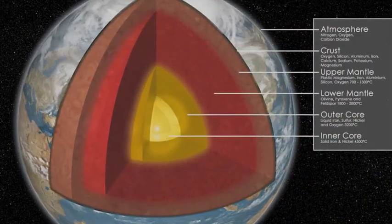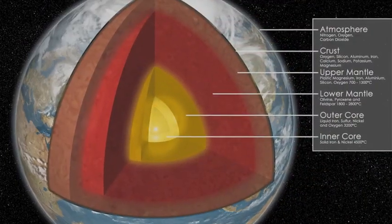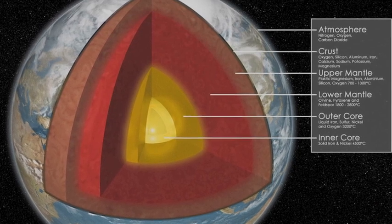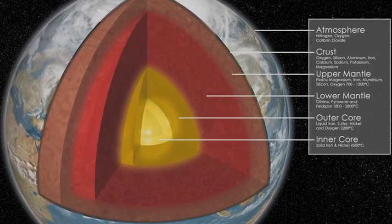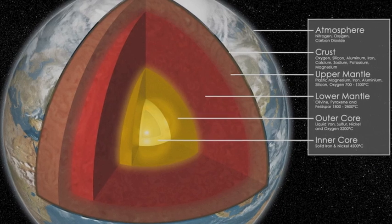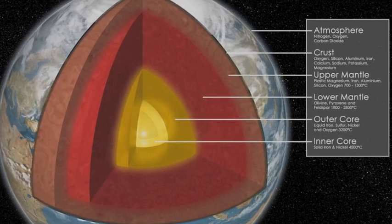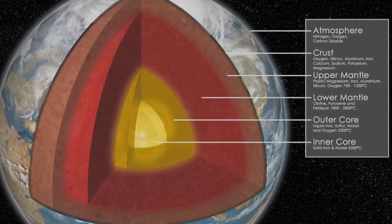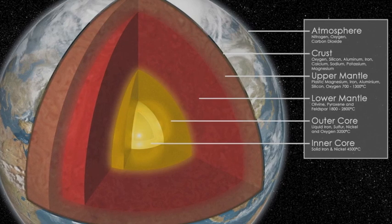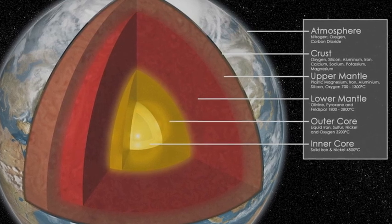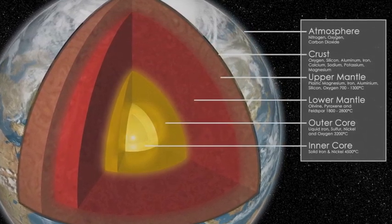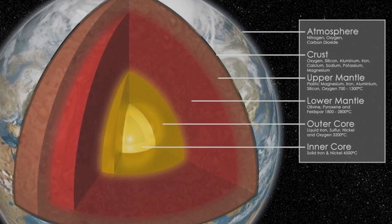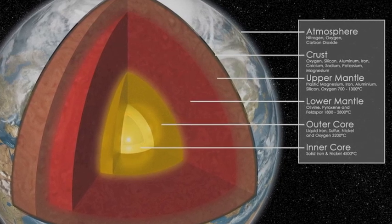To truly understand volcanoes, we're first going to look at the layers of the Earth. From the outside in, the first layer is the atmosphere, a gaseous layer composed of the air we breathe — oxygen, carbon dioxide, nitrogen. And then there's the crust, which is what we live on. On average, it's about three miles deep, and it's where the tectonic plates are located.